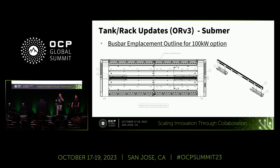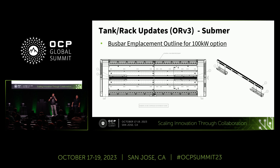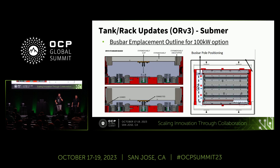This is an example of bus bar emplacement for a 100-kilowatt option. Here we see the tank, which is a 100-kilowatt tank, and in the center a bus bar going from end to end, with attachments going into the center at the bottom of the tank. The bus bar is placed in the center as it was initially defined, but we can also see a setup with three bus bars, one at each extreme. We can eventually have tanks of 200 or 300 kilowatts depending on cooling densities and market requirements.